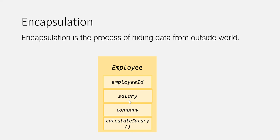Hiding a property or data from the outside world is called encapsulation. In many object-oriented programming languages, encapsulation is achieved by using a keyword called private. The private keyword makes a property hidden from the outside world. So encapsulation is the process of hiding data from the outside world.